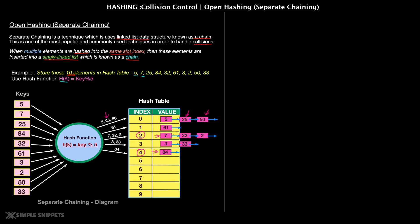We have already studied singly linked list and doubly linked list in this DSA playlist — please check them out for detailed explanation. Moving ahead, 61 mod 5 gives 1, so 61 goes at index position 1. 3 mod 5 gives 3, so 3 goes at index position 3. 2 mod 5 gives 2 — index position 2 already has 7 and 32, so 2 will also be placed at index position 2, attached at the end of this singly linked list. We have 3 elements at index 2, 3 elements at index 0, and 2 elements at index 3 because 33 mod 5 gives 3. This is how open hashing or separate chaining works.